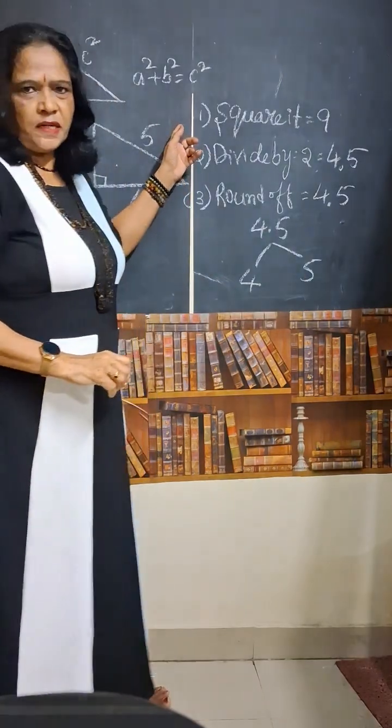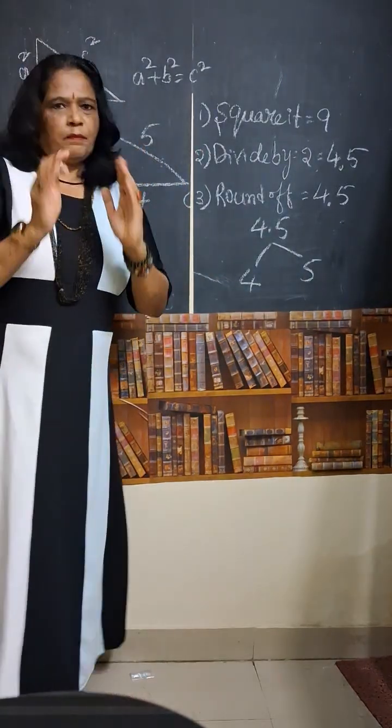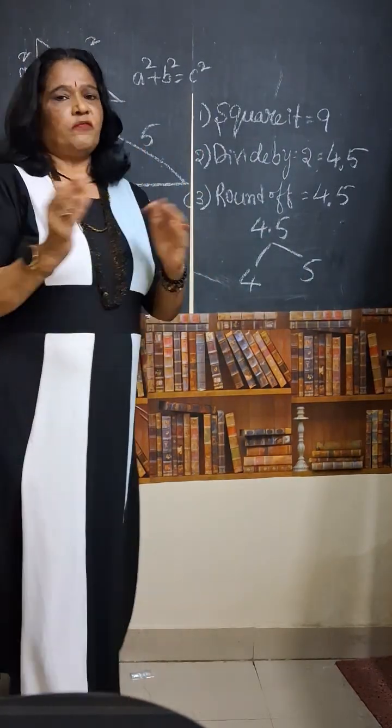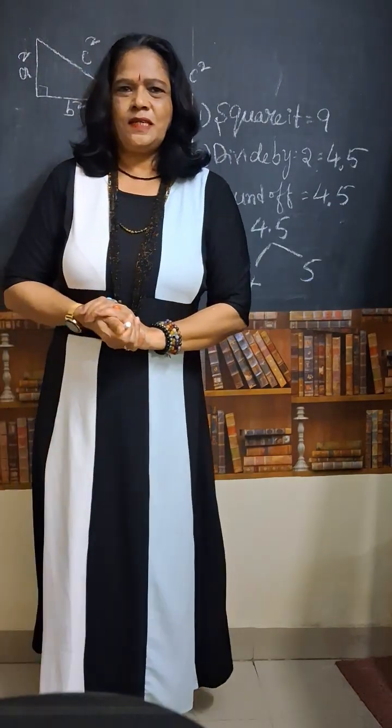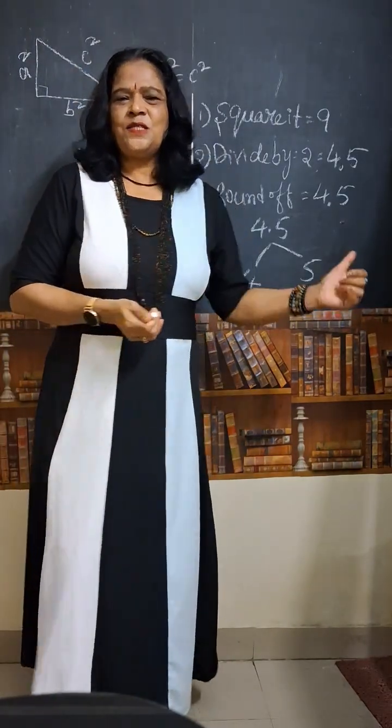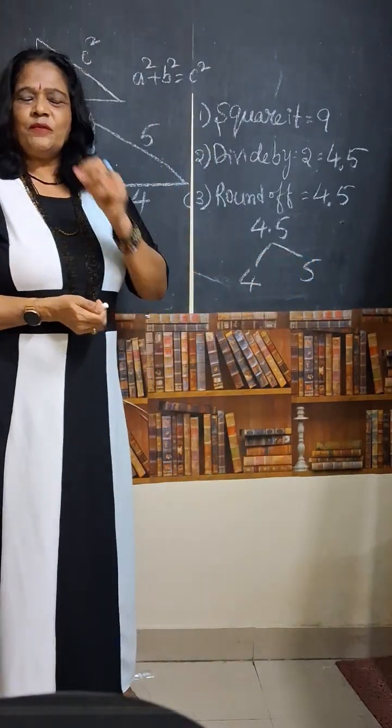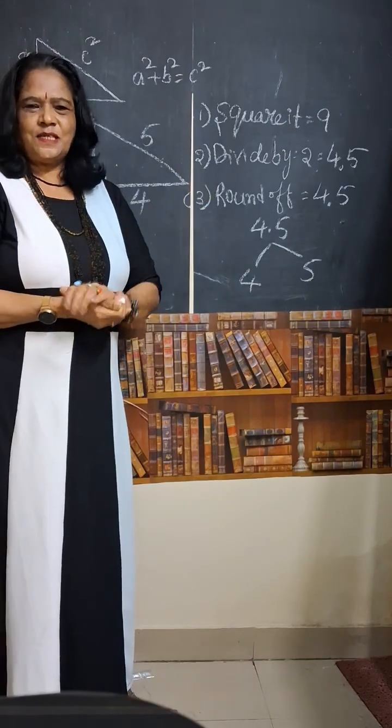Means the bigger number is hypotenuse. Hypotenuse is always bigger than the other two sides. So sum of two sides is equal to the hypotenuse. By using such a beautiful trick, even we can find the Pythagoras theorem.